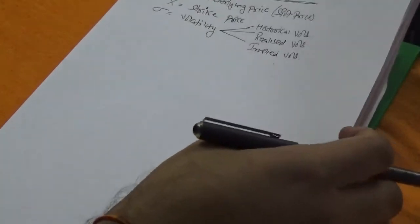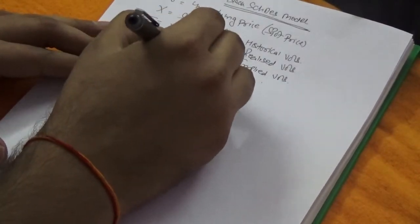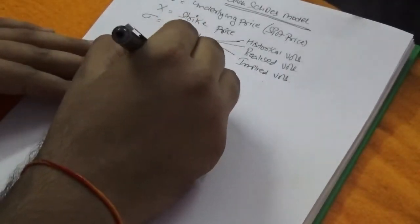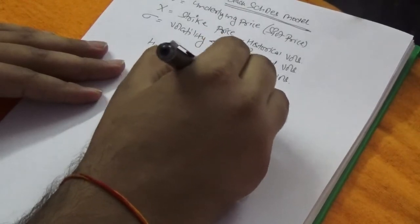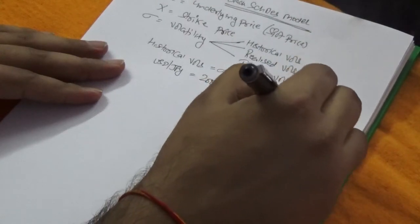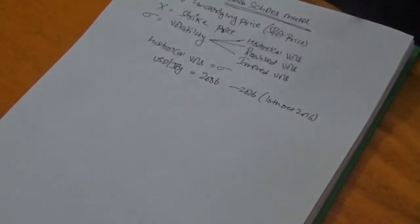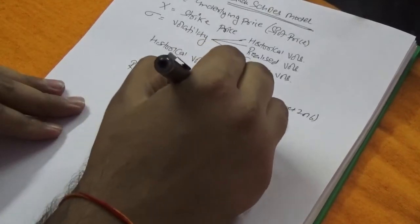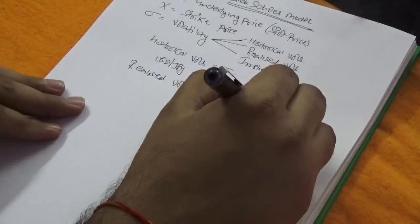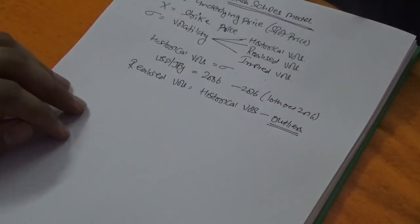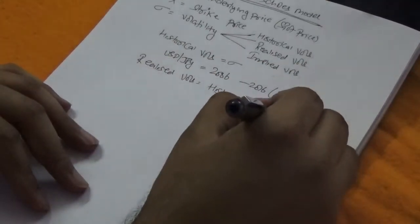Historical volatility equals standard deviation. For example, if I wanted to calculate the volatility of USD/JPY from 2006 to 2016, I can calculate it using standard deviation. Realized volatility is different — it is historical volatility minus outliers. These outliers need to be removed from the calculation.